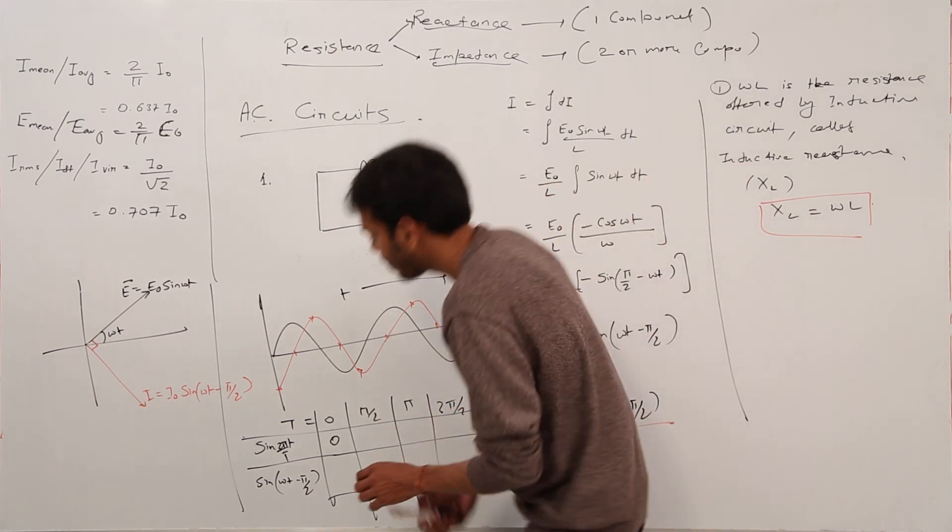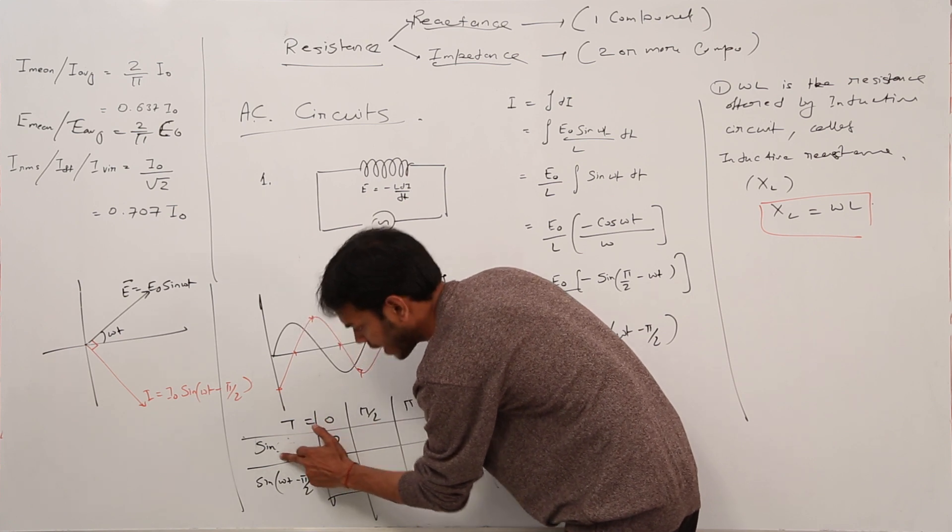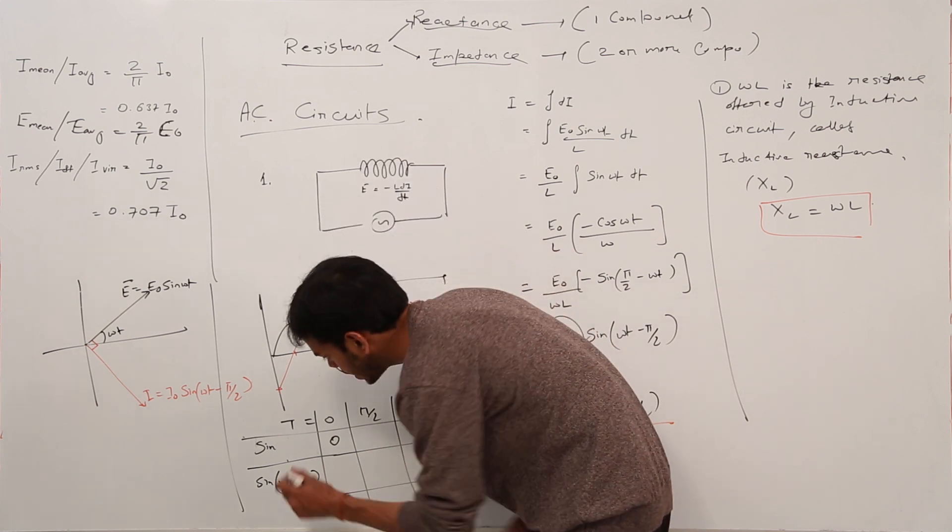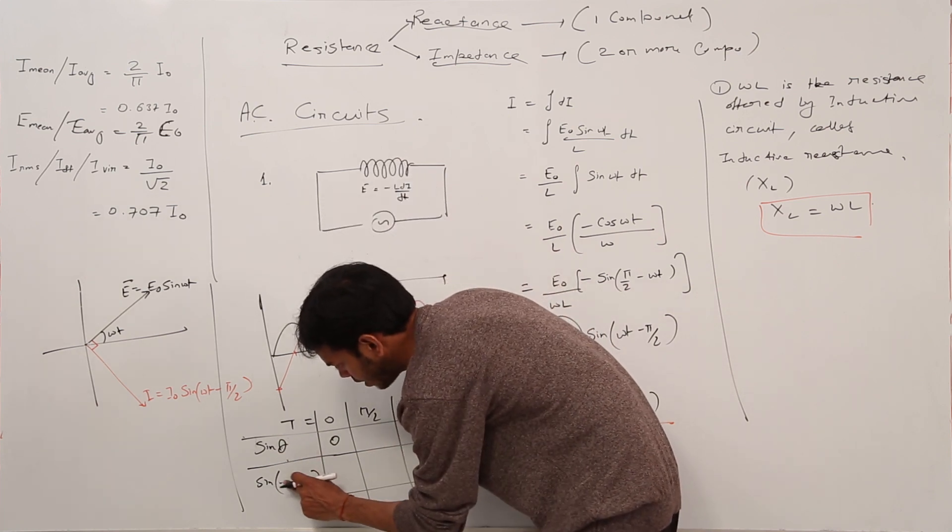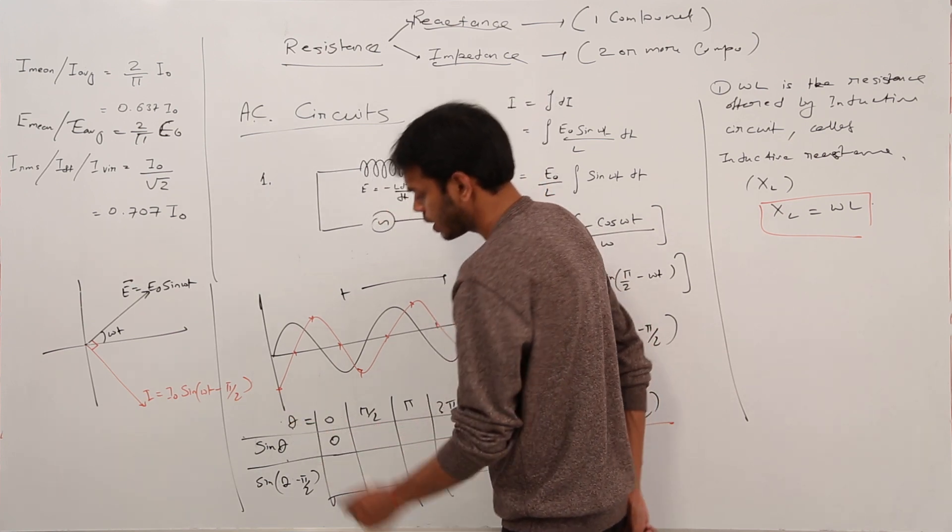Okay, this is not 2π/t. Keep this more simple. I figured out my mistake. Make it sin θ and here make it sin(θ - π/2), and this is the value of sin θ.